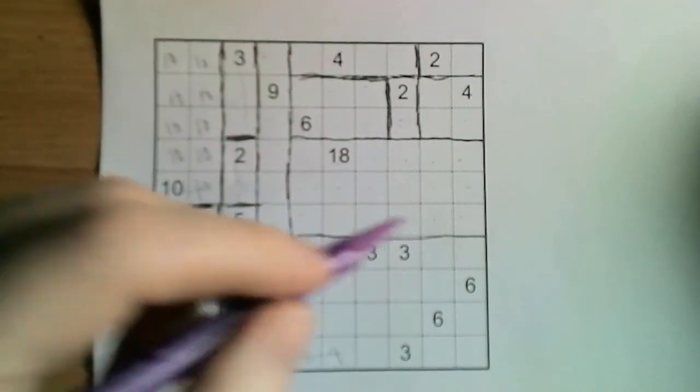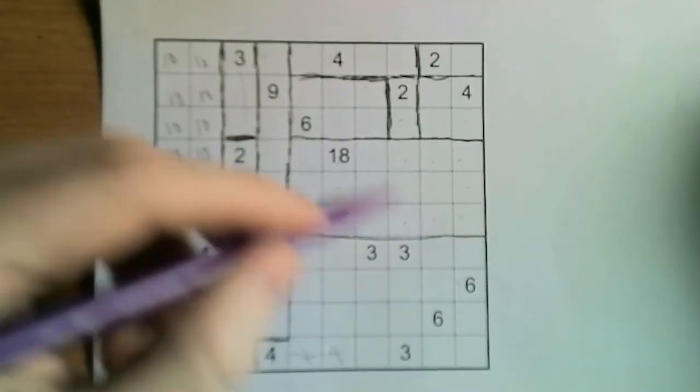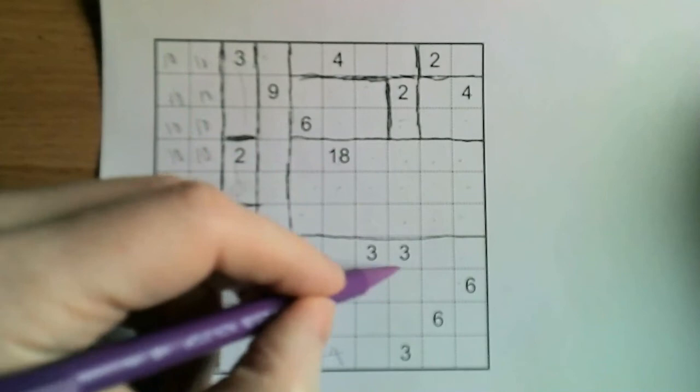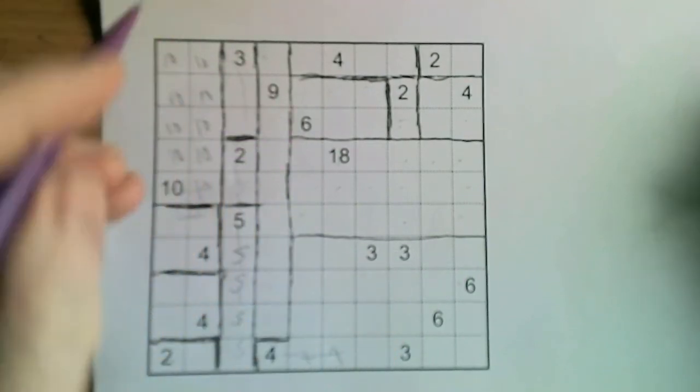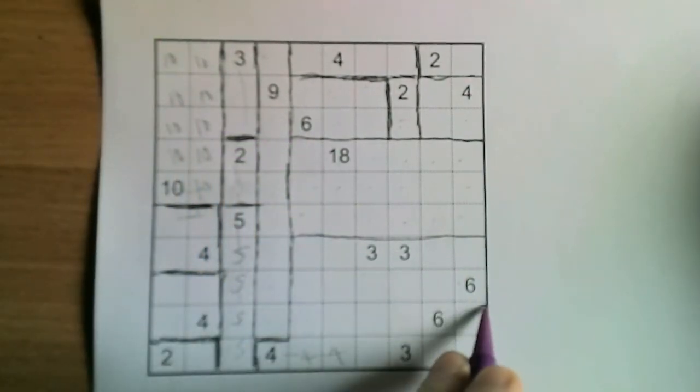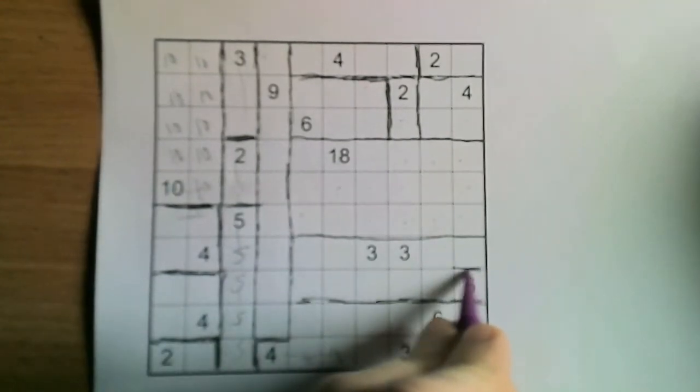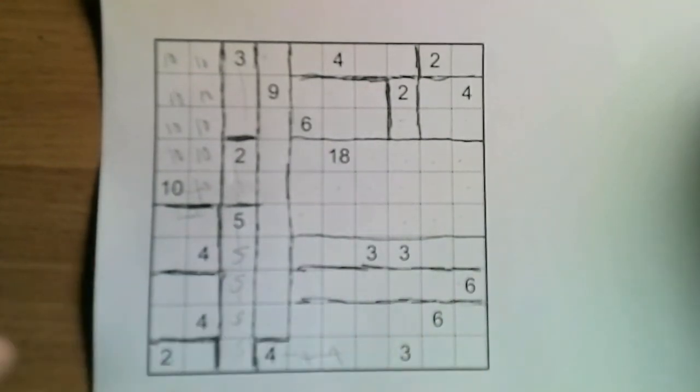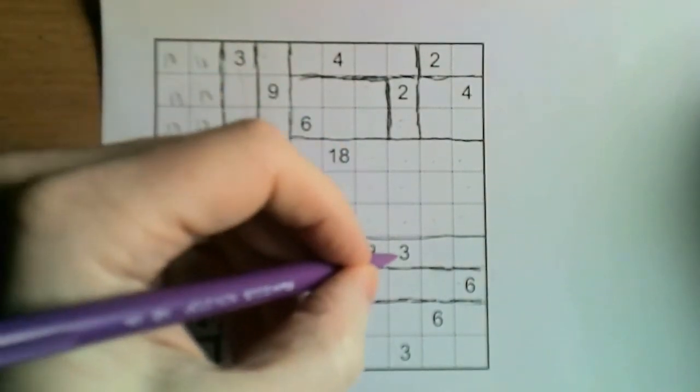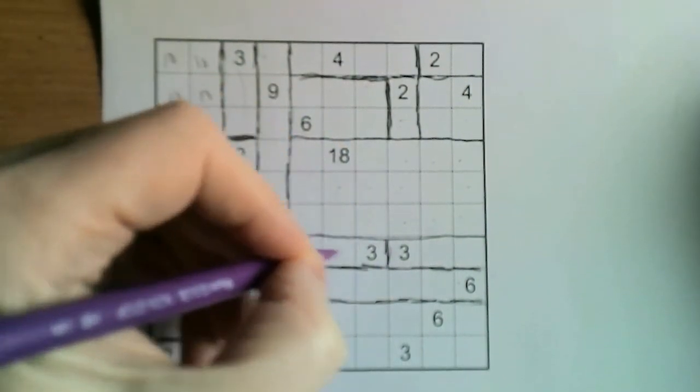Now let's have a look at this 6 here. So it can't be like this. It can't be part of a 2 by 3. So therefore it's going to have to come horizontally, which is going to resolve the puzzle, I think.